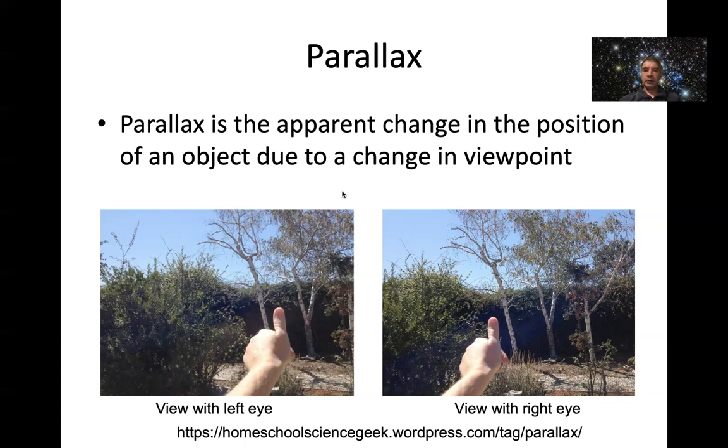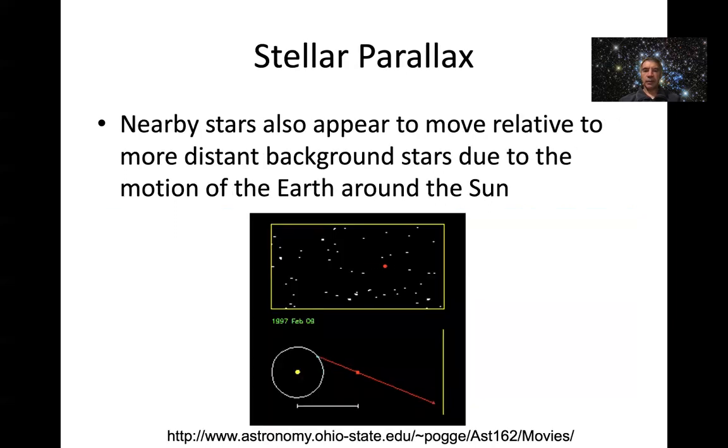So how is this going to help us? Well, the amount that an object appears to change in position for a given change in viewpoint varies depending on how far away the object is. And so that is key to finding the distance.